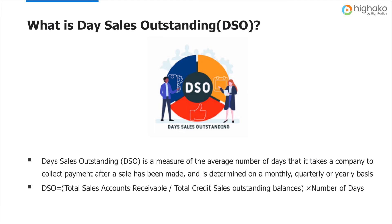Days sales outstanding is the average number of days taken by your customers to make payment after the sales have been made. It is often determined on a monthly, quarterly, or yearly basis. DSO is calculated by dividing the total amount of accounts receivable during a given period by the total value of credit sales during the same period, and then multiplying the result by the number of days in the period measured.